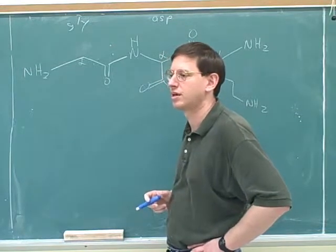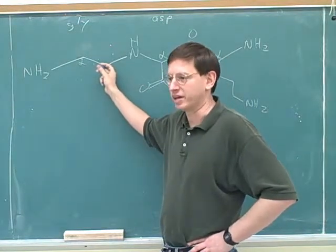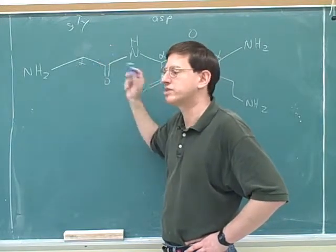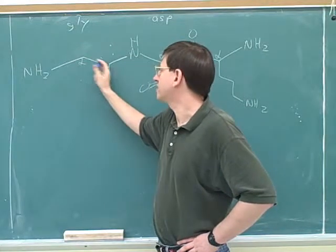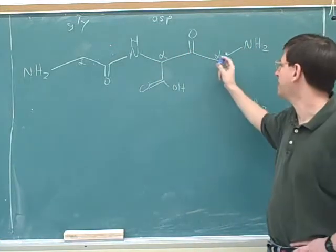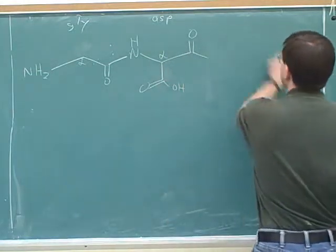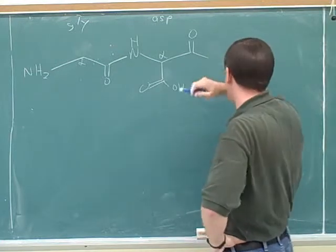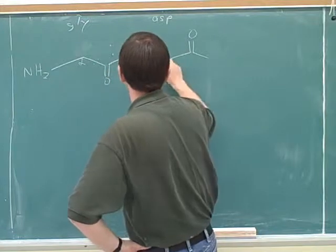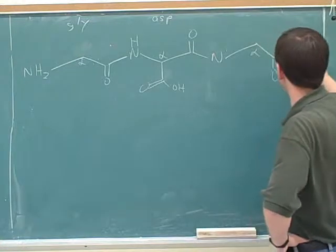The backbone repeats: nitrogen, alpha carbon, carboxy carbon — nitrogen, alpha carbon, carboxy carbon — nitrogen, alpha carbon, carboxy carbon. It's very important to know that chain order because it's easy to get wrong. We know which carbon is the side chain because it's a dead end, while the backbone is the continuous chain.